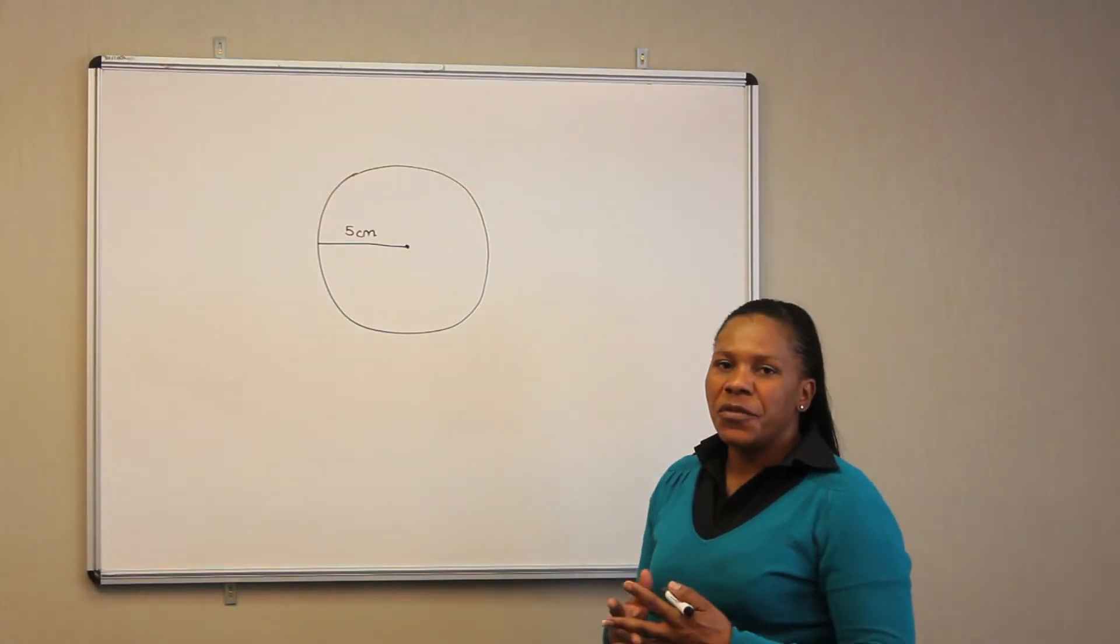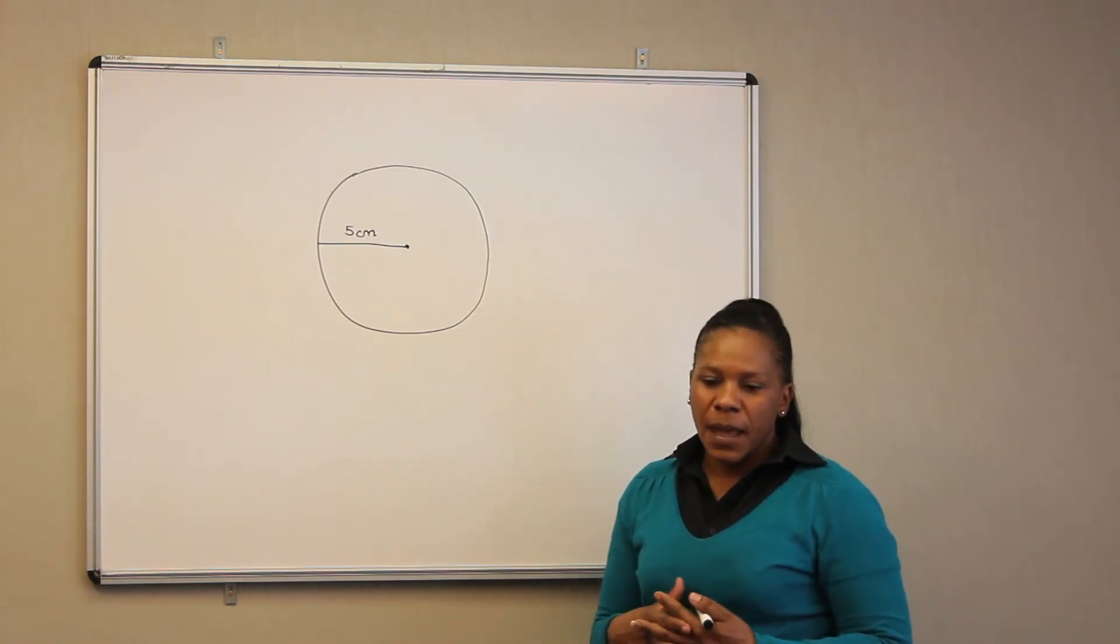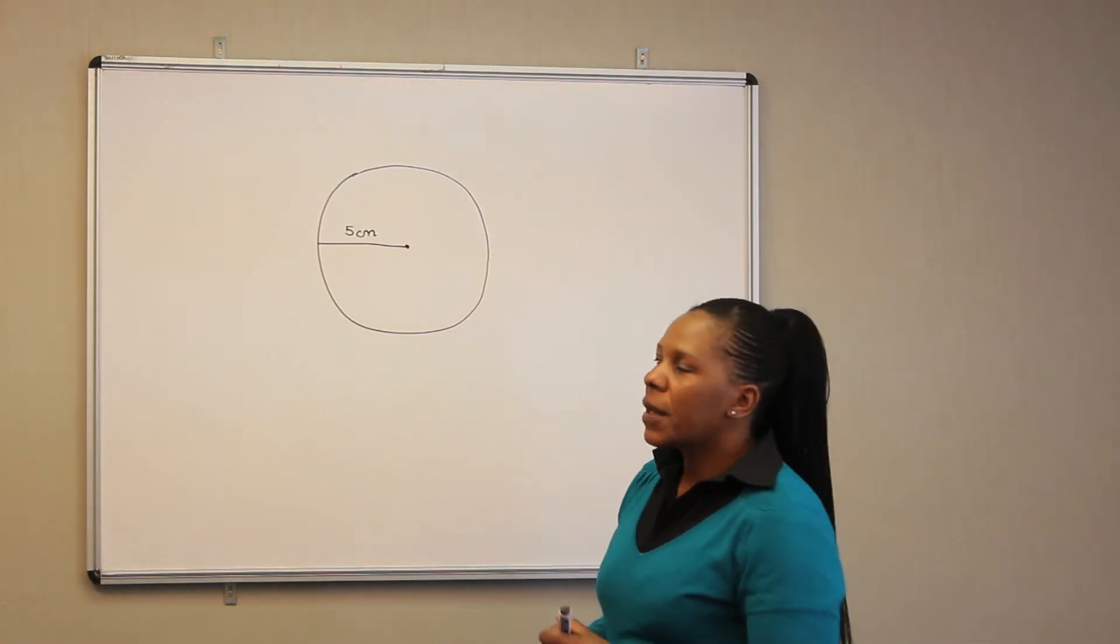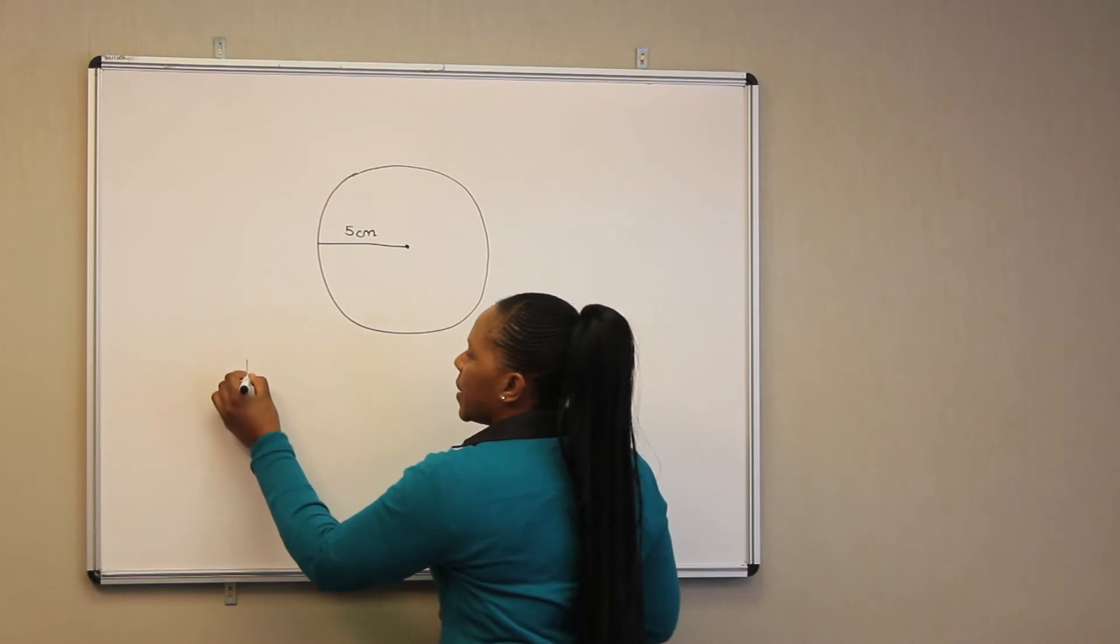The most common method of finding the area of a circle is using the formula pi r squared.